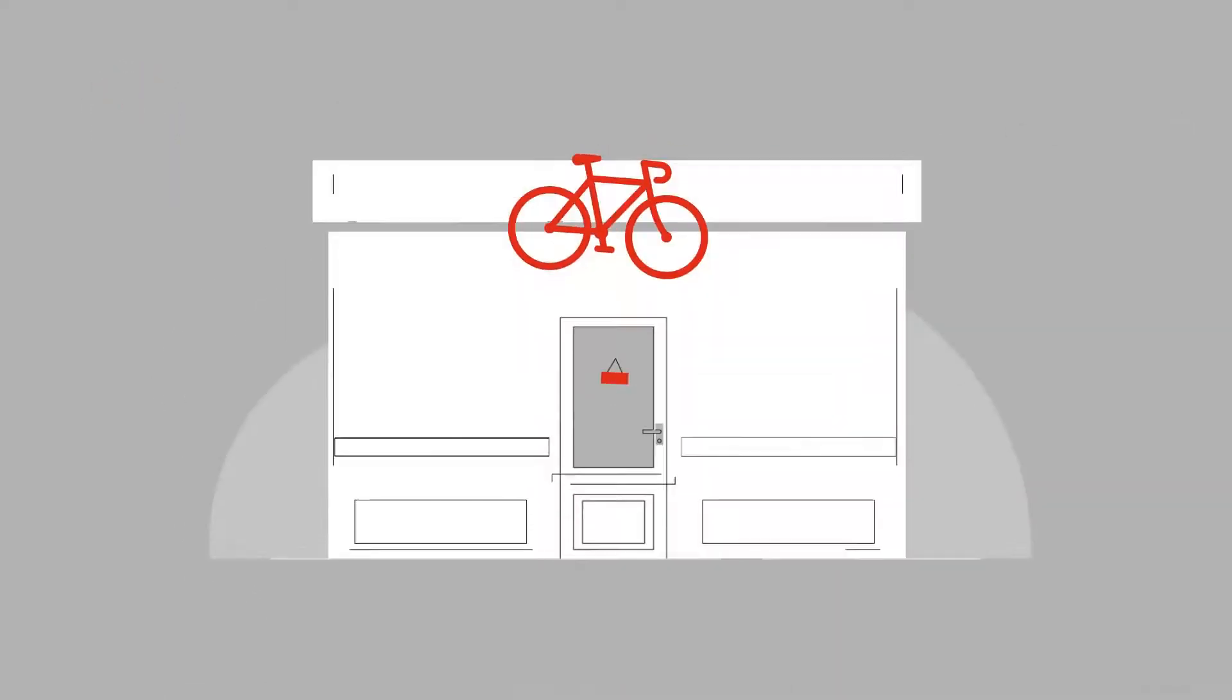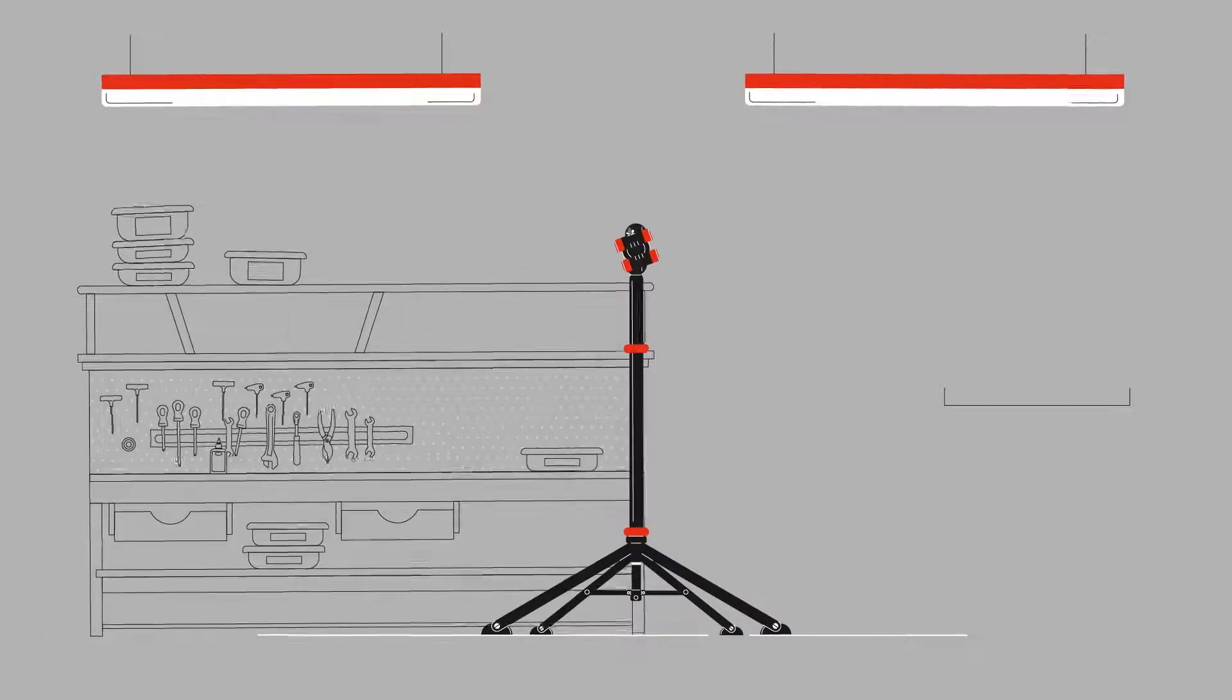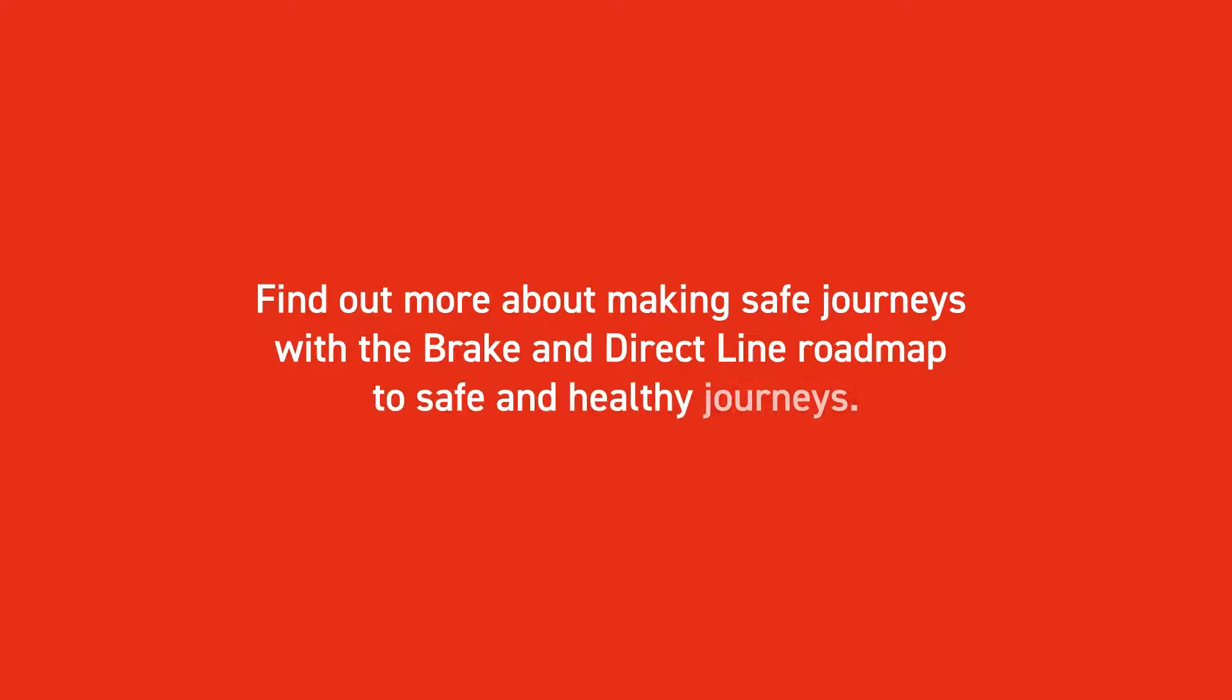It's a good idea to get your bike serviced regularly by your local bike shop. You can also take a course to learn more about basic bicycle maintenance. Find out more about making safe journeys with the Brake and Direct Line roadmap to safe and healthy journeys.